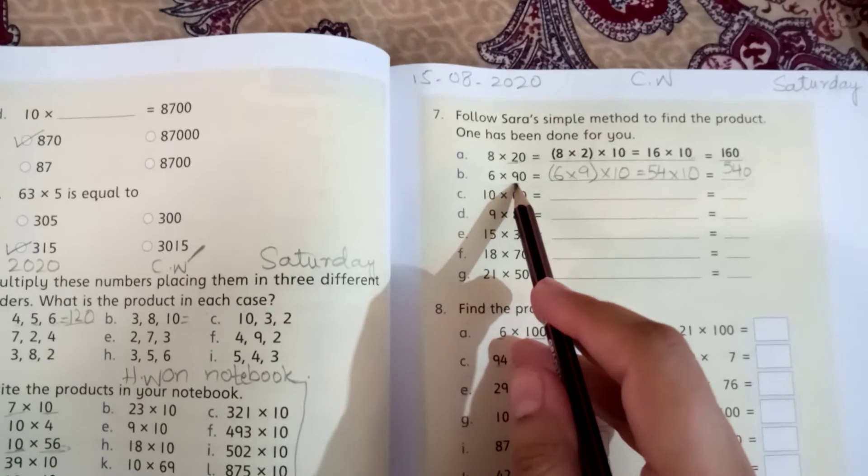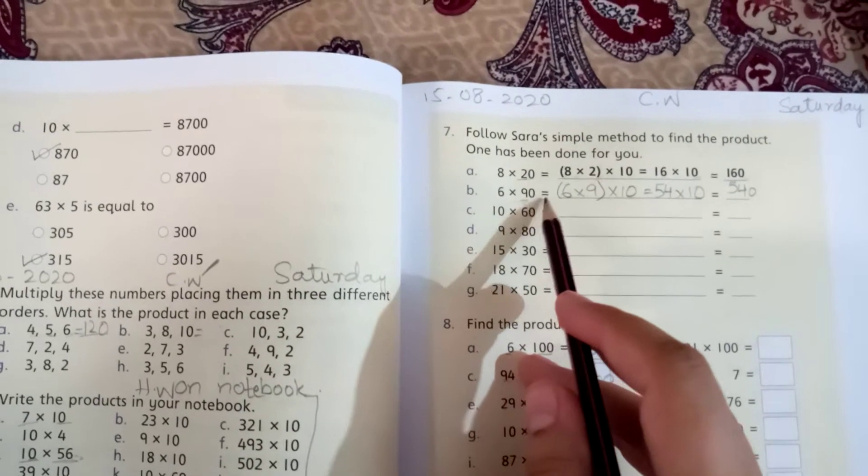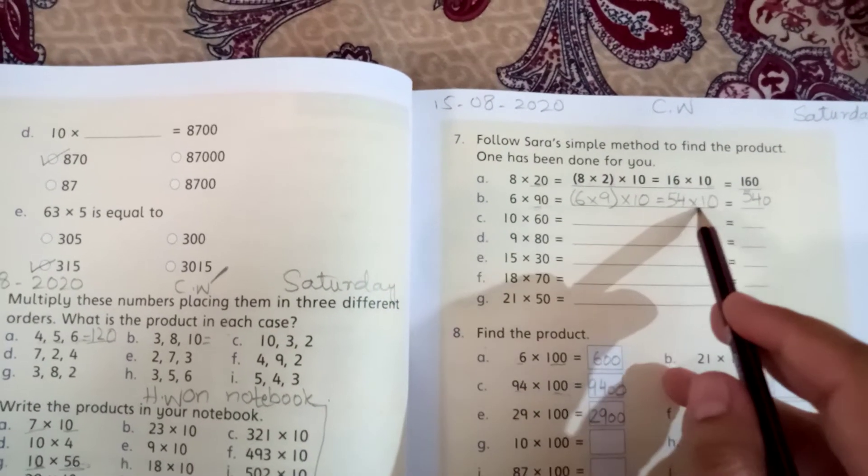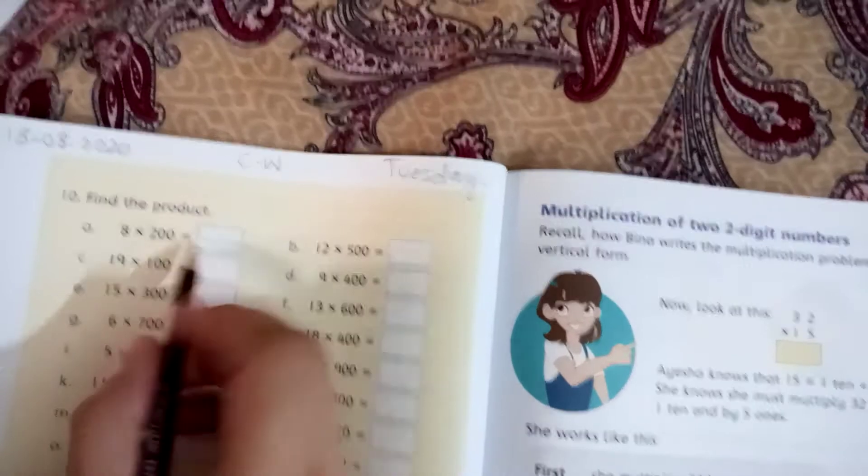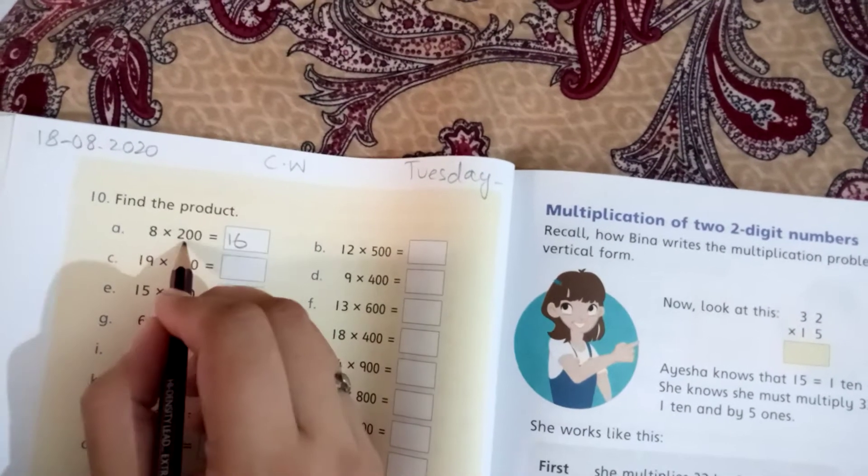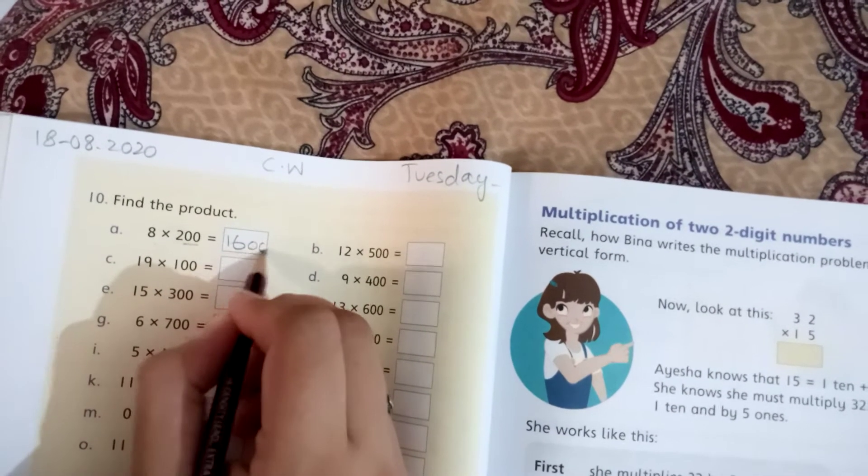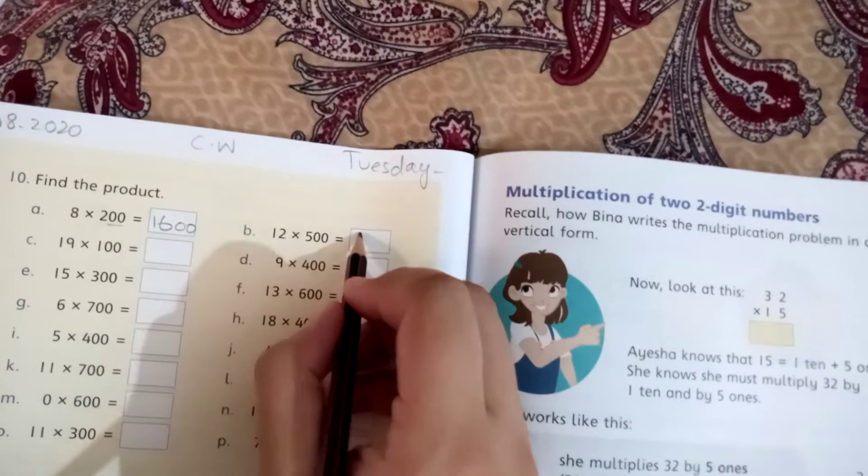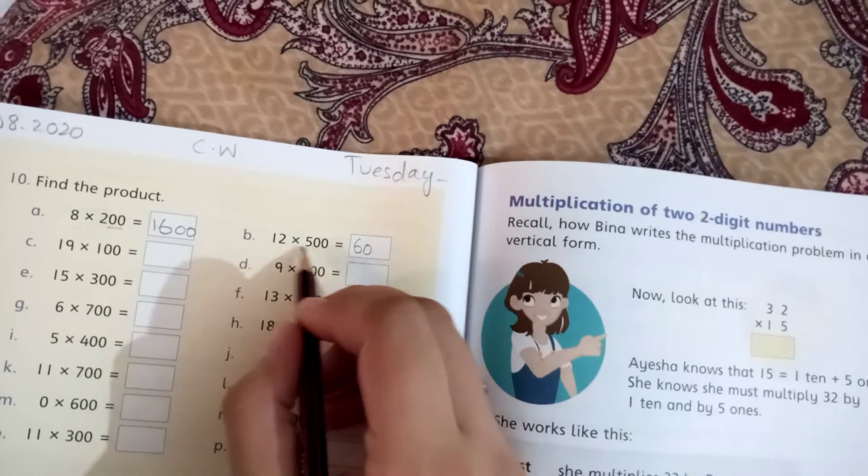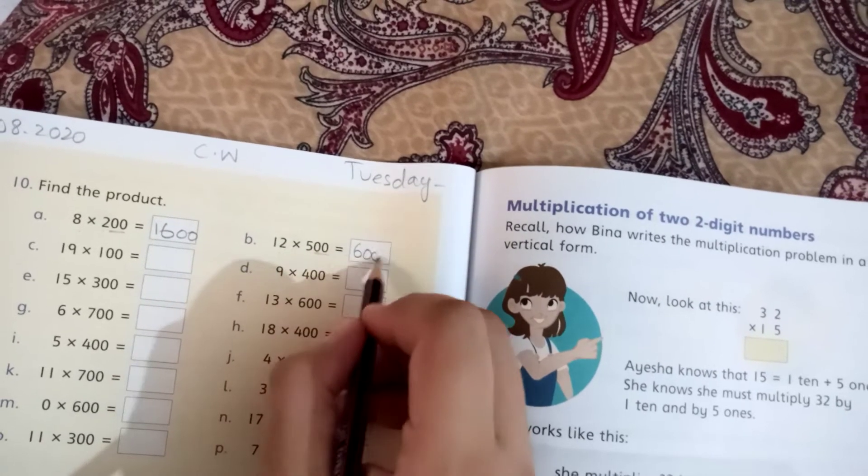Now, I have learned this method. 6 multiply by 9 - 6 nines are 54. Add a 0, it's 540. The answer will be added. Now, 8 multiply by 2 is 16. With 16, these are 2 zeros, so 1600. And 60 with 2 zeros.